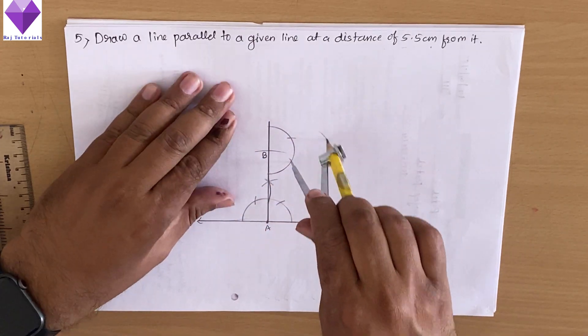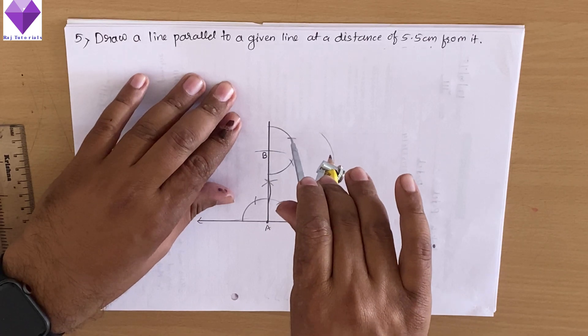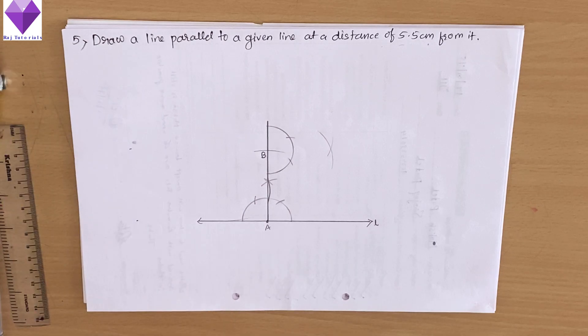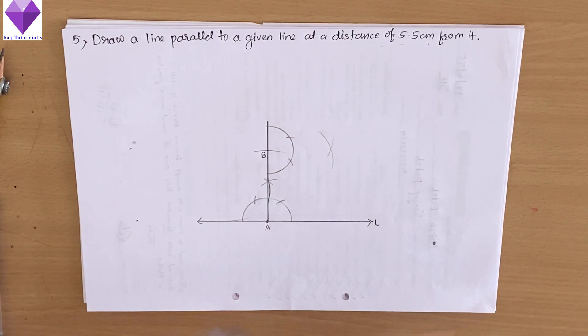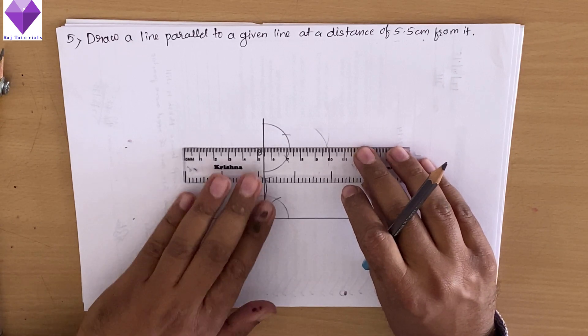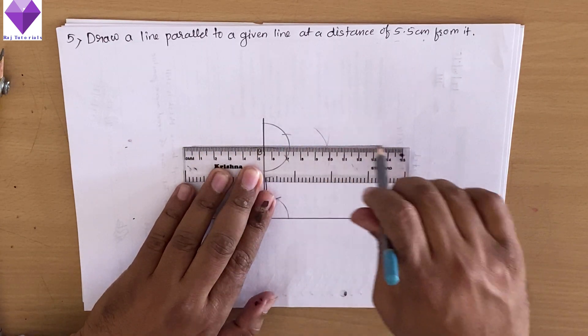And with this 120, I will draw another arc. Now I will join B and that arc to get the required line, and I will extend it on both sides.